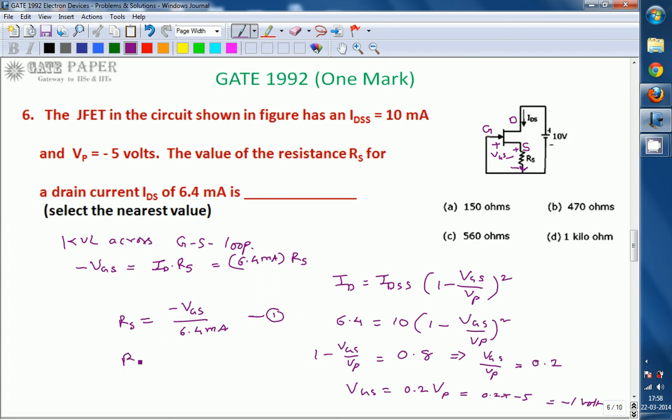If you substitute minus of minus, it will become plus. From equation 1, minus of minus becomes plus 1 divided by 6.4 into 10 power minus 3. RS value is going to be equal to 156 ohms. The nearest value is A. The answer for this question is A.